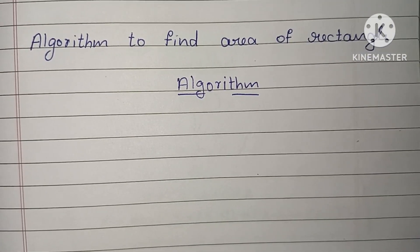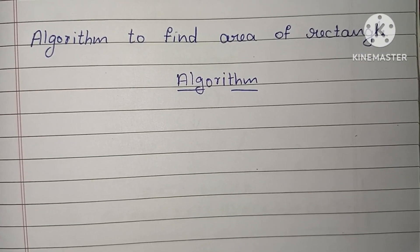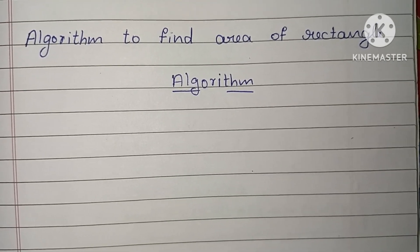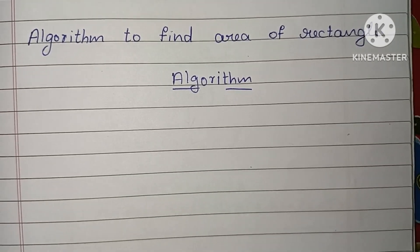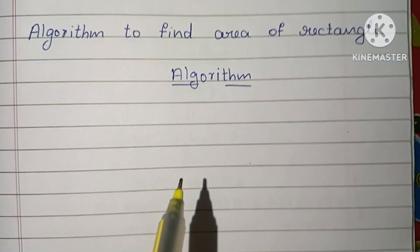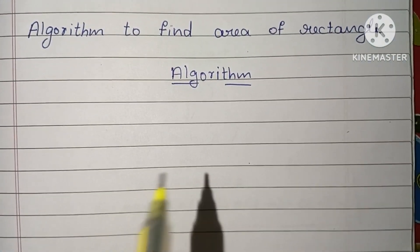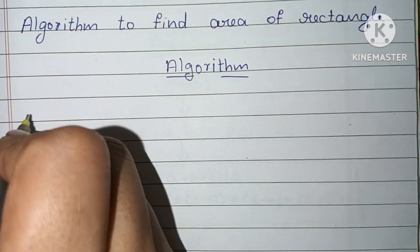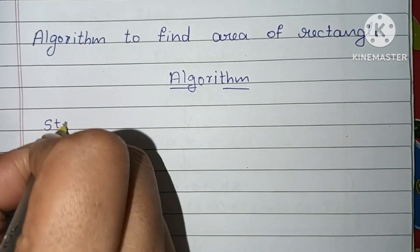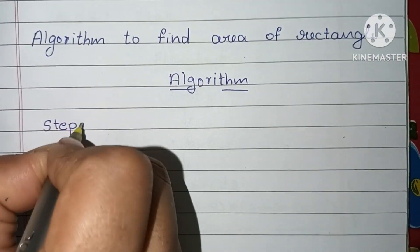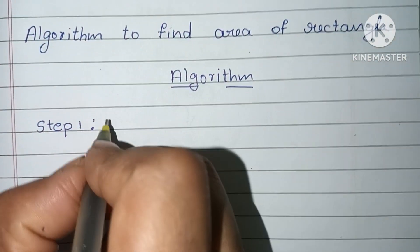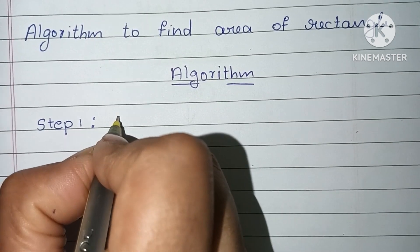In this video we are going to learn how to write an algorithm to find the area of a rectangle. An algorithm is a step-by-step process to solve a problem. In Step 1, an algorithm always starts with a start statement.